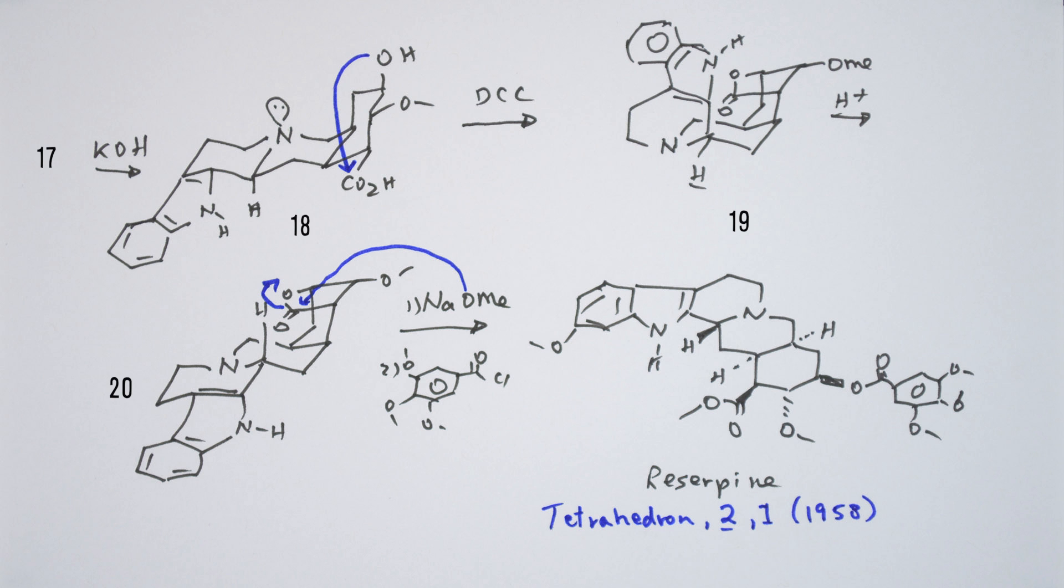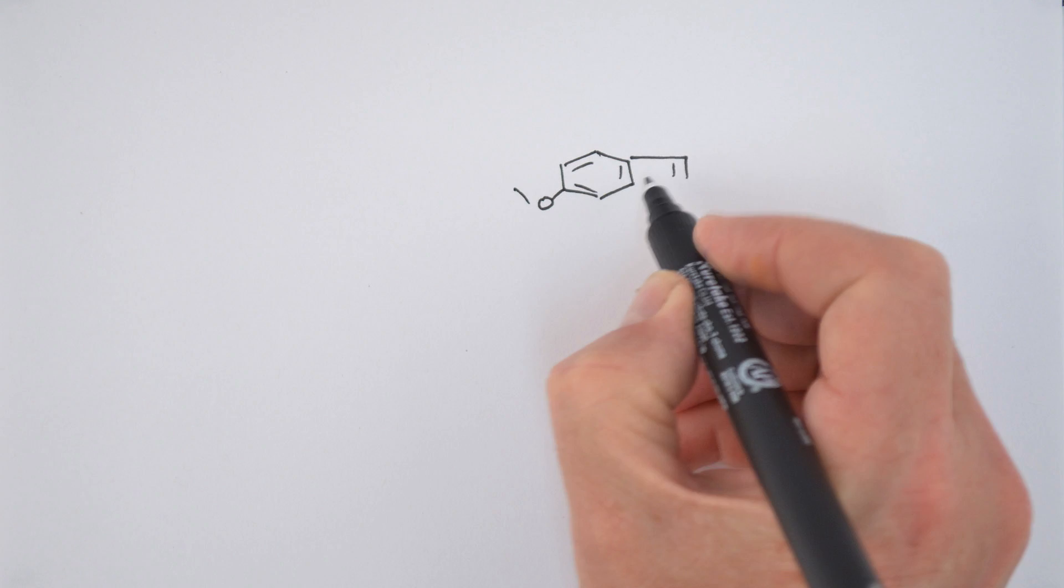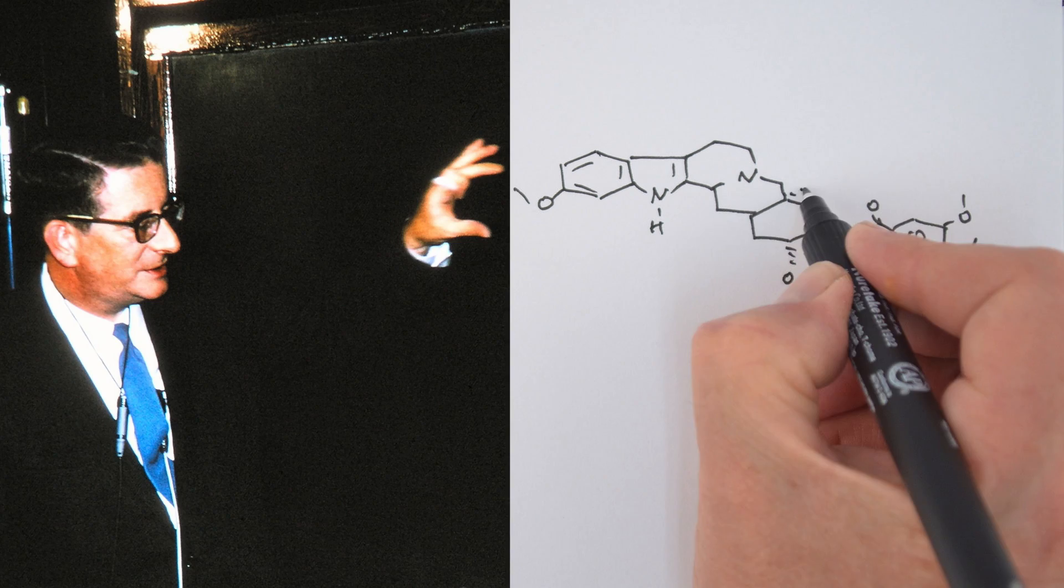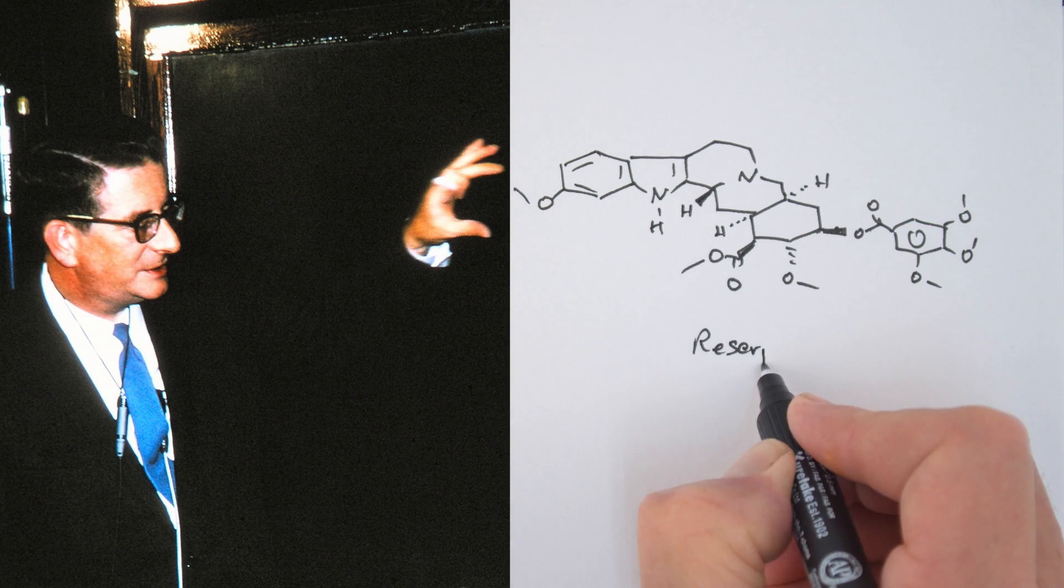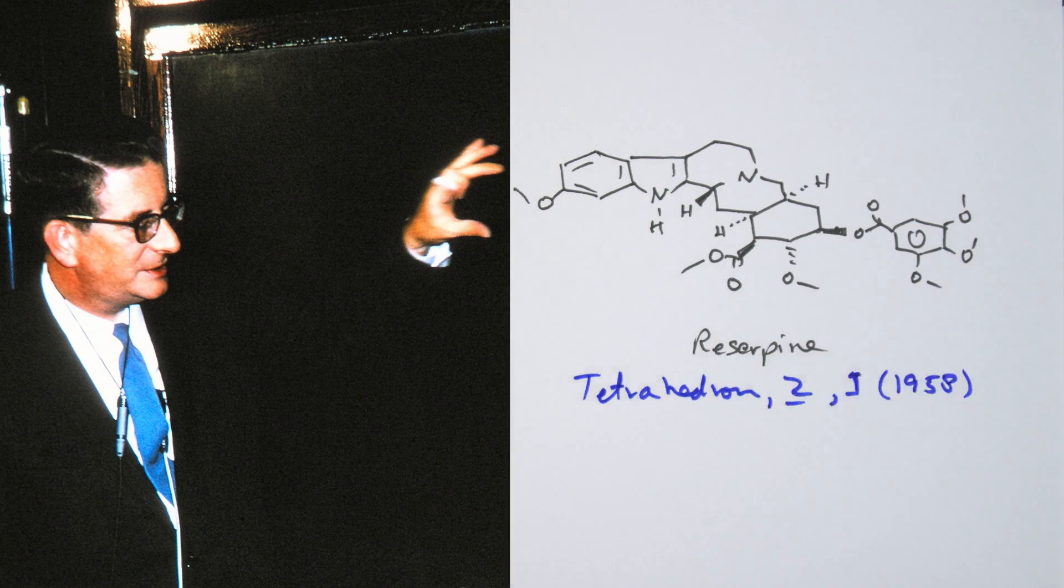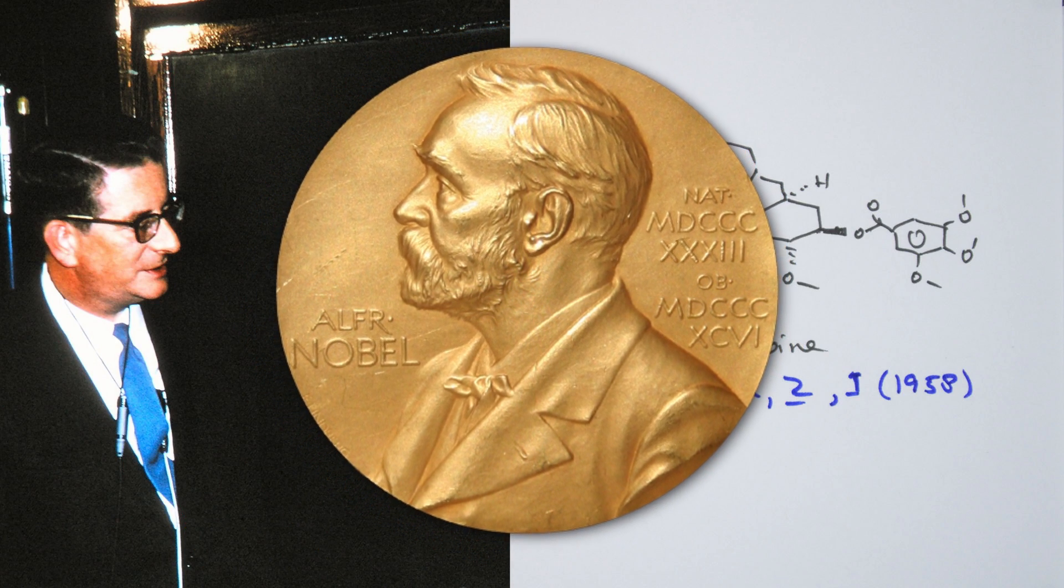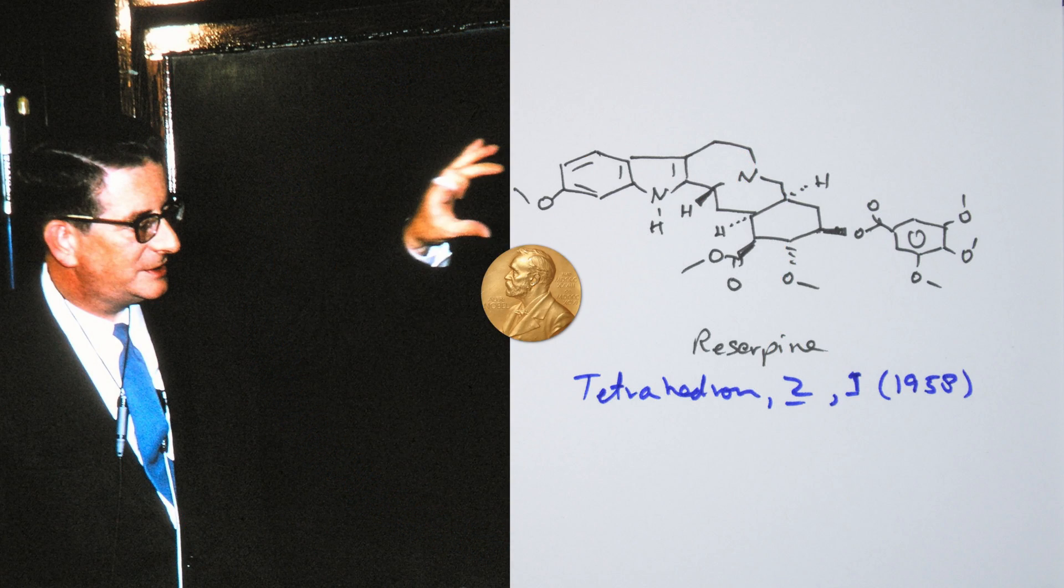Diels-Alder chemistry, molecular orbital analysis, infrared spectroscopy, conformational analysis and neat mechanisms make the Woodward synthesis of reserpine a great learning tool. The full details of the synthesis can be found in an early edition of Tetrahedron. Woodward was awarded the Nobel Prize in Chemistry in 1965 for his outstanding contributions to organic synthesis.